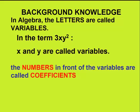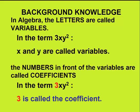The number in front of the variables are called coefficients. In our example, 3xy squared, 3 is called the coefficient.